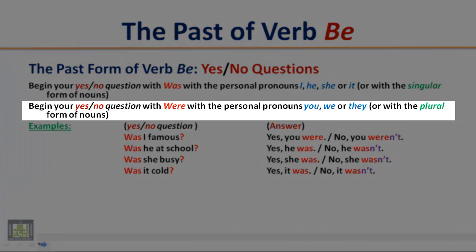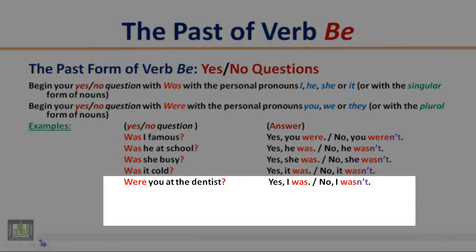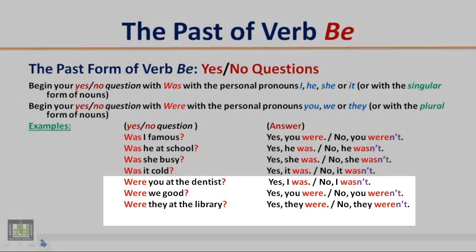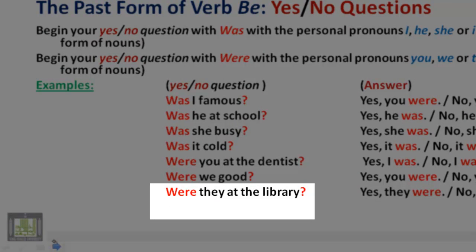Begin your yes/no question with 'were' with the personal pronouns you, we, or they, or with the plural form of nouns. Examples: Were you at the dentist? Yes, I was. / No, I wasn't. Were we good? Yes, you were. / No, you weren't. Were they at the library? Yes, they were. / No, they weren't. Pay attention to the word order in yes/no questions: begin your question with verb B, followed by the subject.